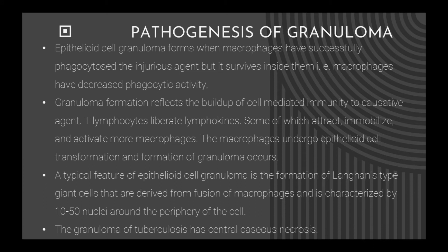A typical feature of epithelioid cell granuloma is the formation of Langhans-type giant cells, derived from the fusion of macrophages, characterized by 10 to 50 nuclei around the periphery of the cell. The granuloma of tuberculosis has central caseous necrosis.